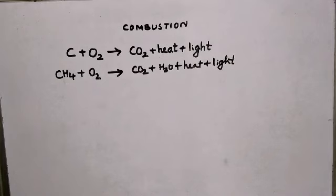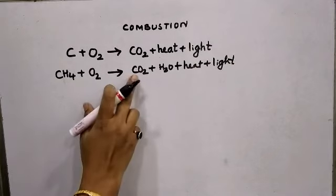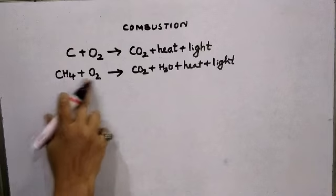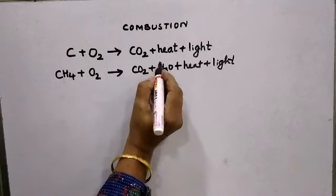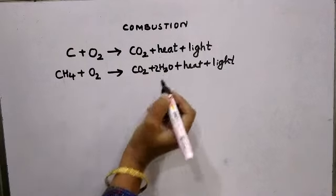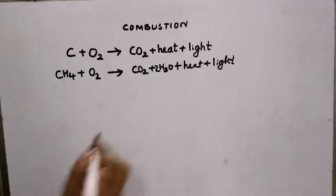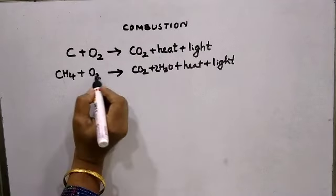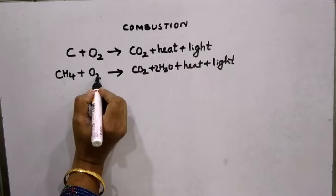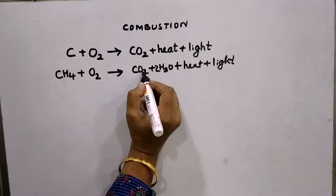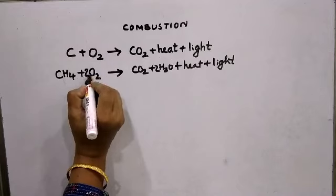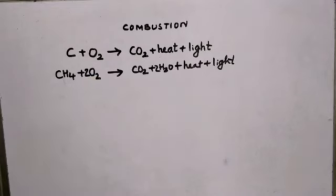Let us balance the reaction for methane combustion. There is one carbon atom on both sides. There are four hydrogen atoms on the left, but only two on the right, so I put two as a coefficient for H₂O. On the left there are two oxygen atoms, while on the right there are two plus two, four oxygen atoms. Therefore, I put two as the coefficient in front of O₂. The reaction is balanced.